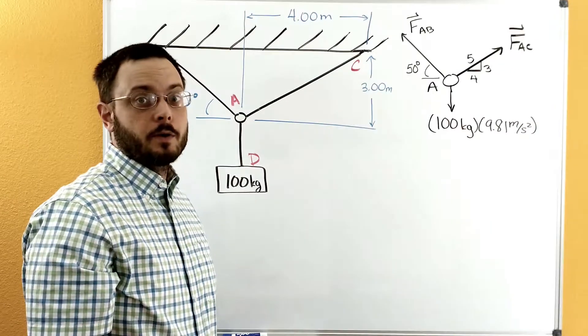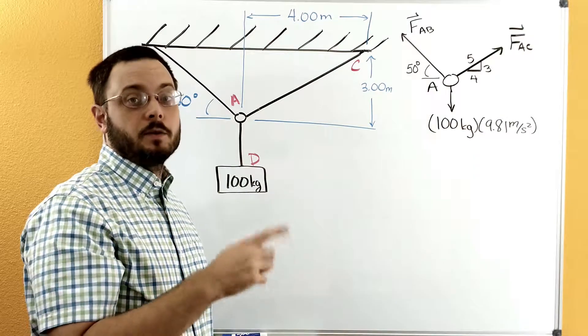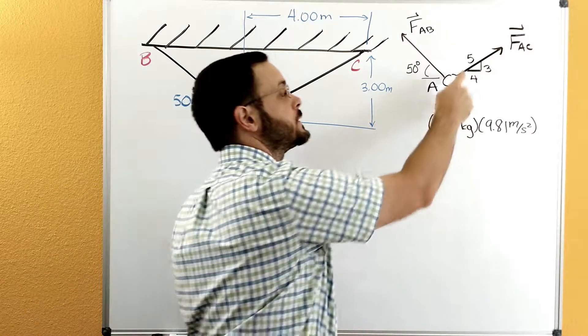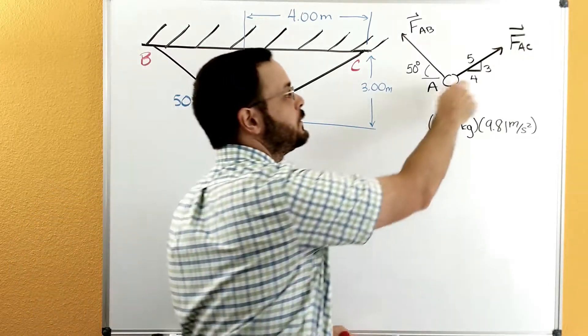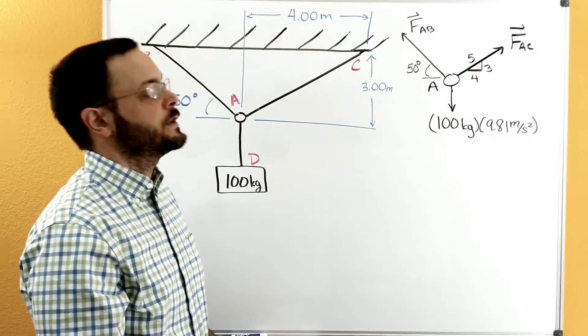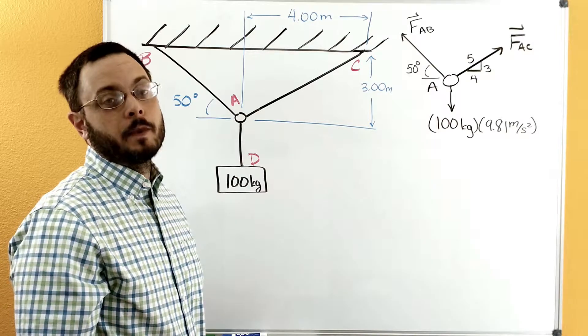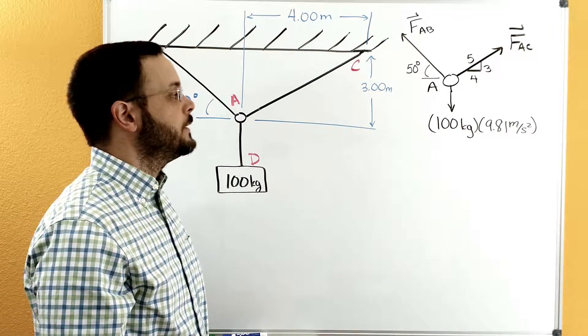When you take 3 squared plus 4 squared, and then you take a square root, you get 5. It's a 3, 4, 5 right triangle. So we've got that 3, 4, 5 right triangle now sketched in, and that's going to give us the direction information on FAC.